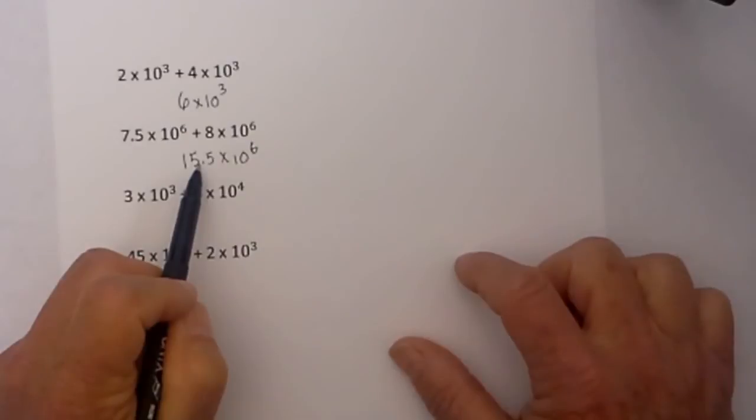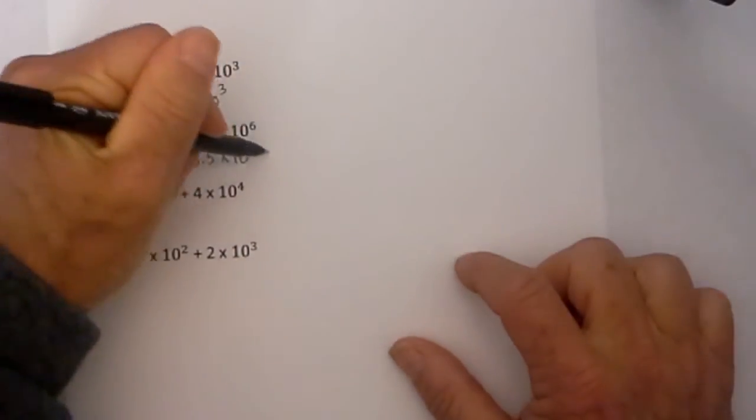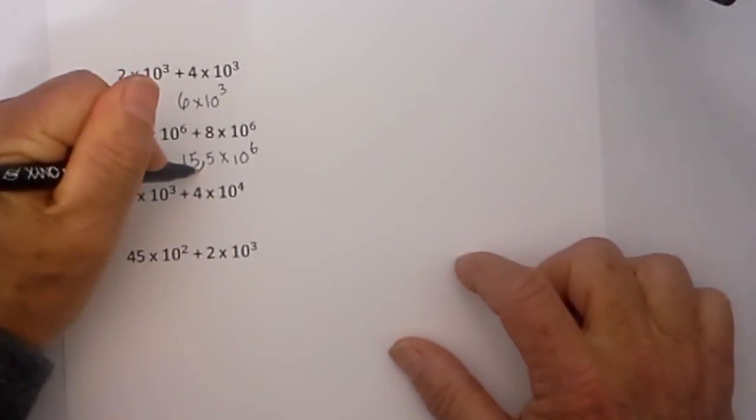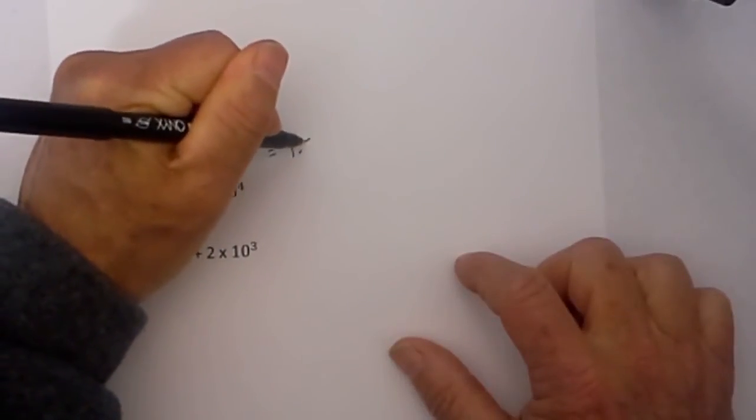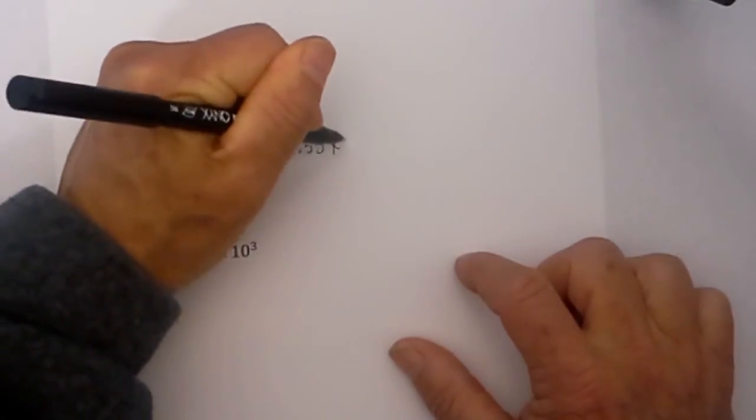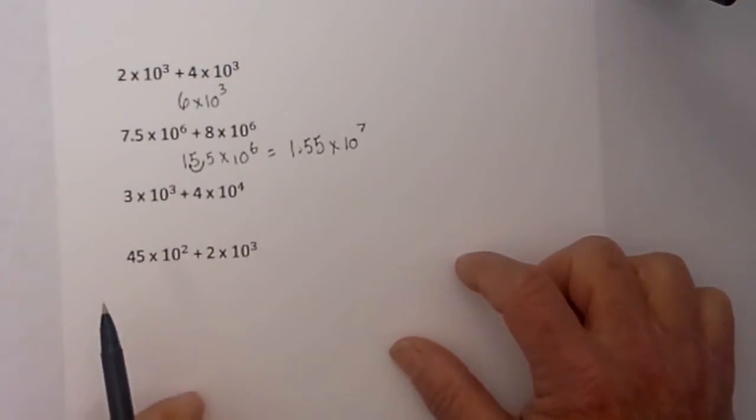So if I need to make the number smaller by moving the decimal to the left, I will need to increase the exponent so it will become 1.55 times 10 to the seventh because I need to increase the exponent 1.